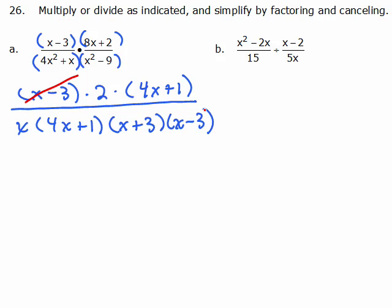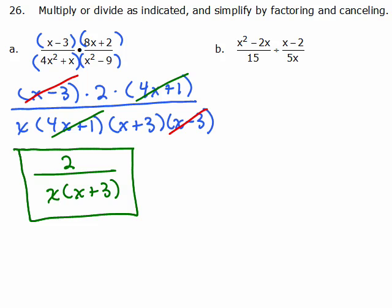So the x minus 3 cancels with that x minus 3. The 4x plus 1 cancels with that 4x plus 1. So I'm left with a 2 at the top, there we go, it should be an x. And there we go.